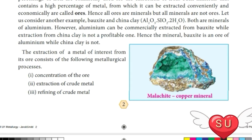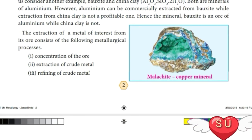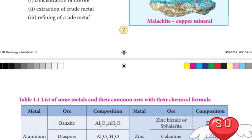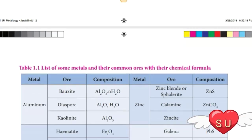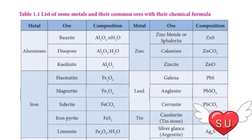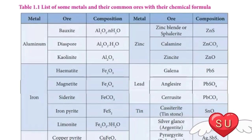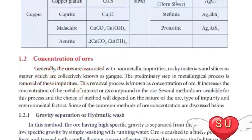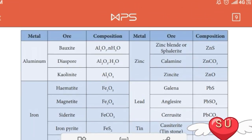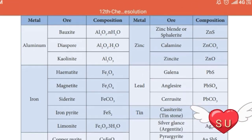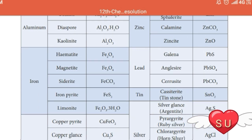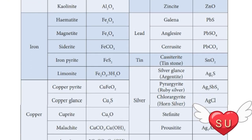Metallurgical processes. There are three processes used in metallurgy. The first one is concentration of ore, the second is extraction of crude metal, and the third is refining of crude metal. Before that, we are going to see some of the metals and their common ores with their chemical formulas. In this table, we can see many types of ores such as oxide ores, sulphide ores, carbonate ores and halogen ores.